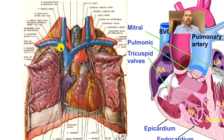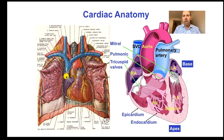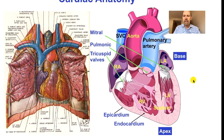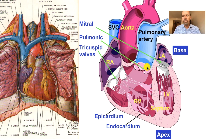Here you see the superior vena cava that drains into the right atrium. We get a clearer picture in this cartoon. Here again we have the right ventricle. The inflow valve for the right ventricle is the tricuspid valve and the inflow valve for the left ventricle is the mitral valve. The outflow from the left ventricle is through the aorta and the outflow from the right ventricle through the pulmonic valve into the pulmonary artery. That blood goes to the lungs and then returns via the pulmonary veins to the left atrium. The systemic blood flow through the aorta returns via the vena cava to the right atrium.